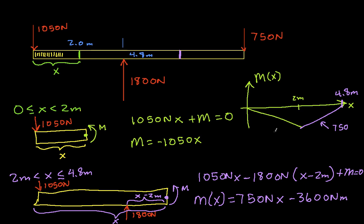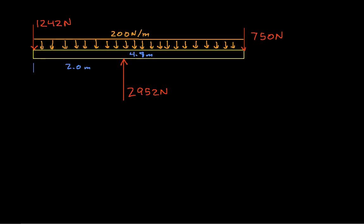It turns out it's really not that hard when you have concentrated forces. Now let's look at a situation where we have a distributed force. We have a beam loaded with a concentrated force here and here, and then a distributed force of 200 newtons per meter along the length of the beam. Again the idea is we will make a cut at some point and call that point X, and to begin with we'll have X be between zero and two meters so we don't have to deal with the upward force yet.